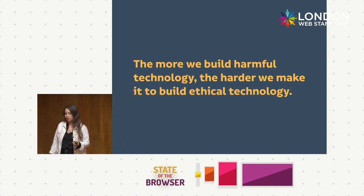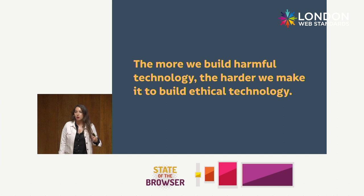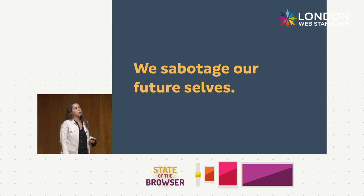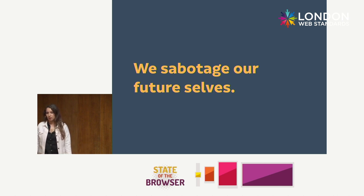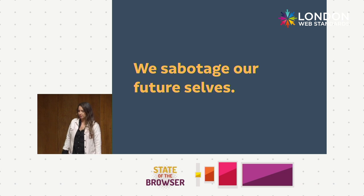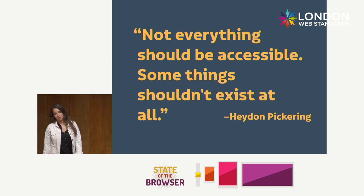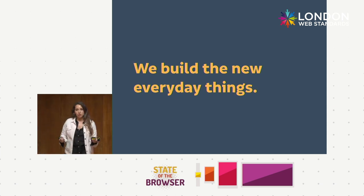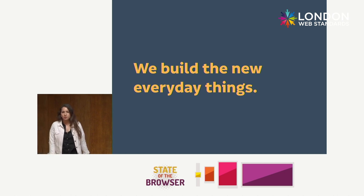We can't separate inclusive design from ethical practice. We don't just want to open up harmful technologies to everyone. The more we build on unethical technology, the harder it actually becomes to build ethical technology — harder to finance it, to find the right tools, to find people who want to work on alternatives. And so we continue to sabotage our future selves. As someone once tweeted: not everything should be accessible — some things shouldn't exist at all. We build the new everyday things, and we have to take responsibility for that.